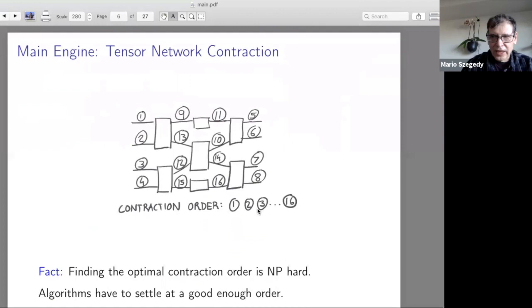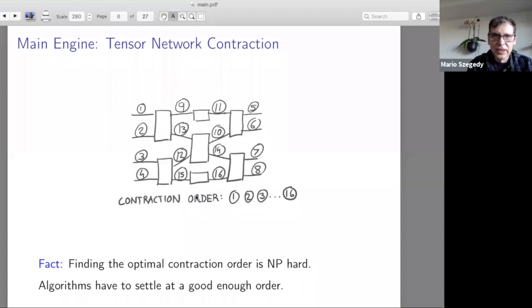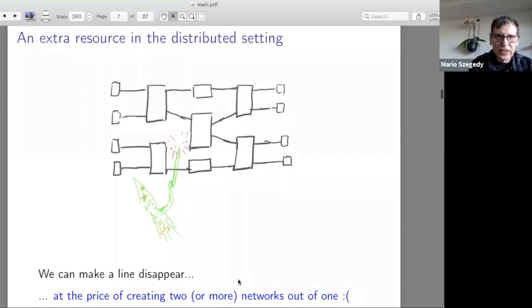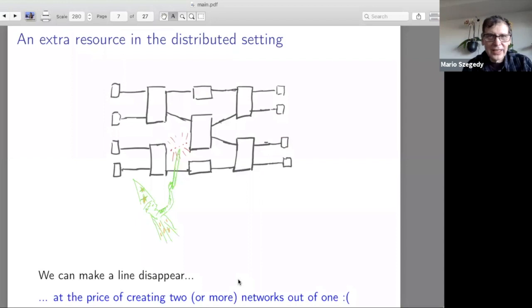Now let me talk a little bit about looking under the hood. The main engine is a tensor network contraction engine. When you have a tensor network, you have to decide the contraction order for the edges. Depending on the contraction order, your computation running times can be very different. You had better find a good contraction order. At least to find the best is NP-hard, so most algorithms are aimed at finding a good enough order. But we have yet another resource at our disposal, which is that we can make an edge in this tensor network disappear, but of course there is a price which is then we have to double the instance.